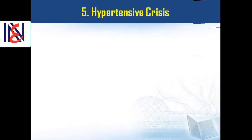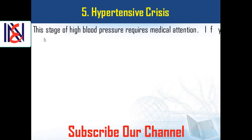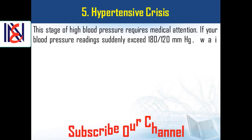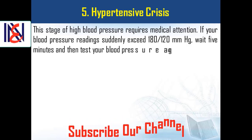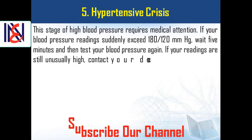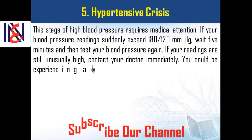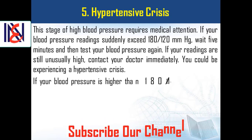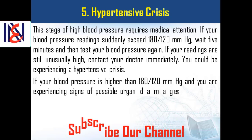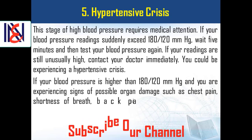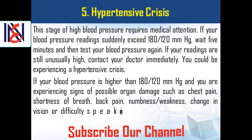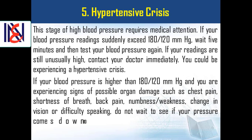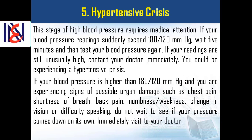5. Hypertensive crisis. This stage of high blood pressure requires medical attention. If your blood pressure readings suddenly exceed 180 over 120 mmHg, wait 5 minutes and then test again. If readings are still unusually high, contact your doctor immediately — you could be experiencing a hypertensive crisis. If your blood pressure is higher than 180 over 120 mmHg and you are experiencing signs of possible organ damage such as chest pain, shortness of breath, back pain, numbness, weakness, change in vision, or difficulty speaking, do not wait — immediately visit your doctor.